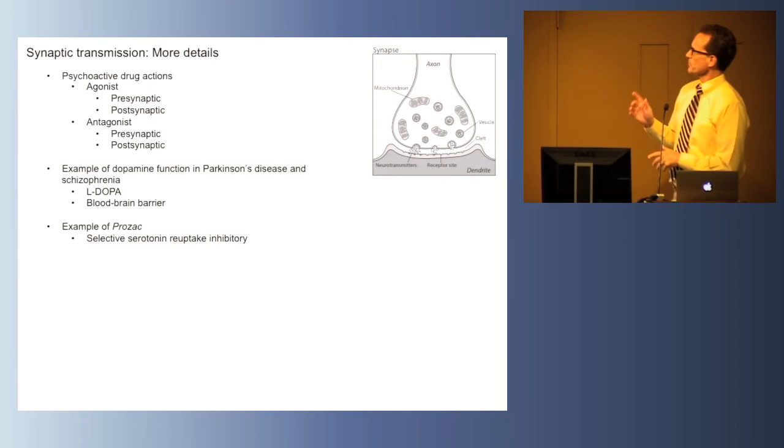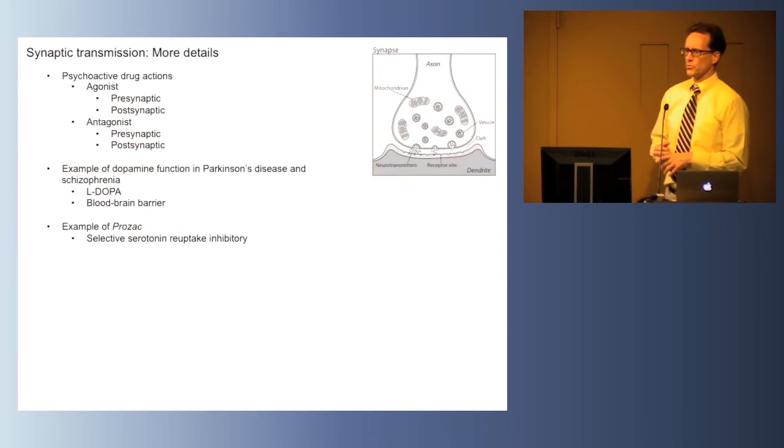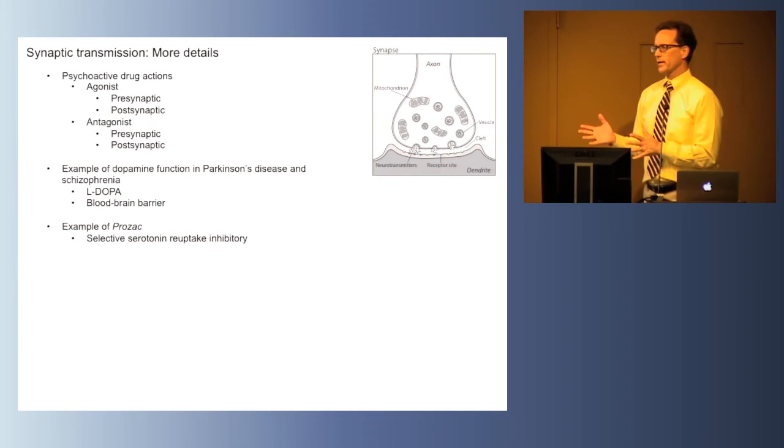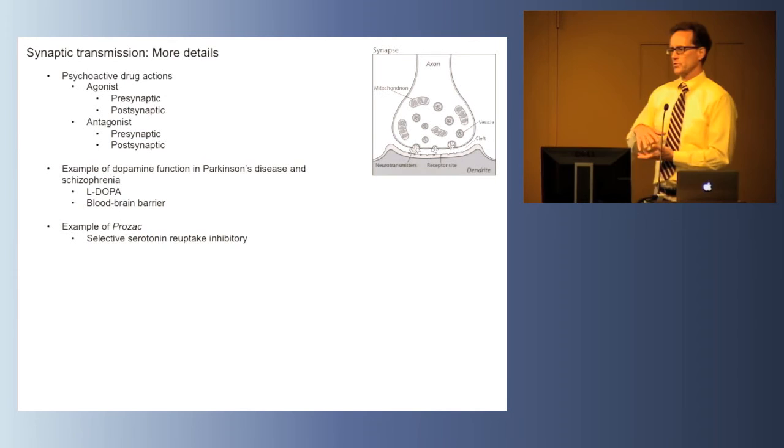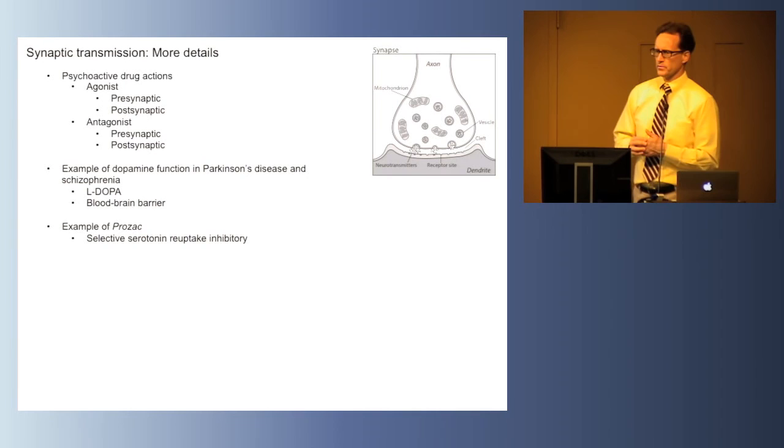Here are some more details about synaptic transmission. Psychoactive drugs refer to drugs that influence the state of the brain to influence the state of the mind. This can be thought or mood or memory, for example. Drugs are categorized in two basic categories: agonists and antagonists. Agonists can operate presynaptically or postsynaptically, and antagonists can operate presynaptically or postsynaptically.